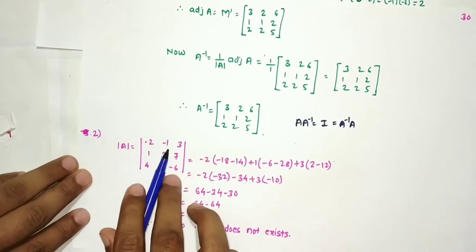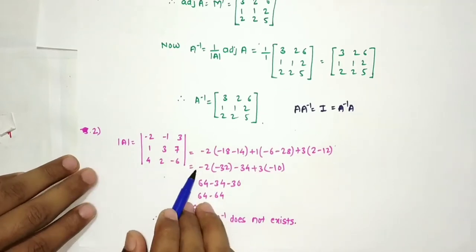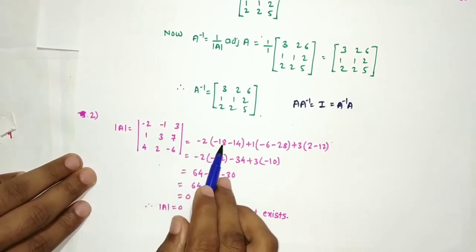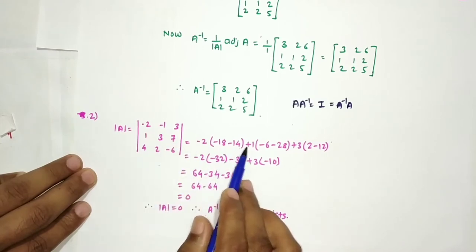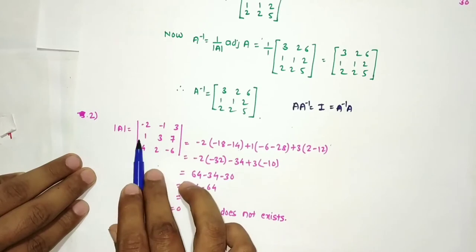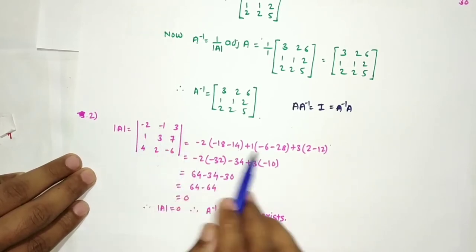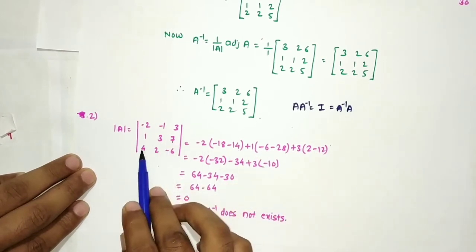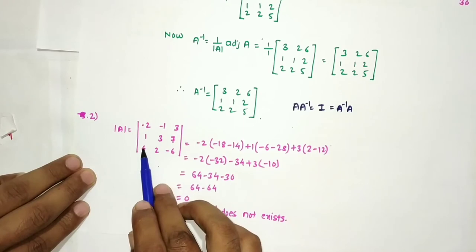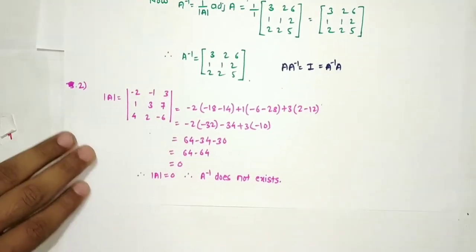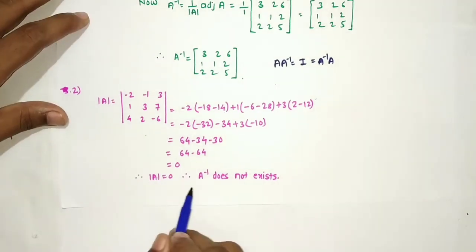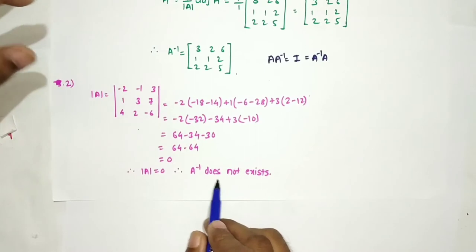The second example has matrix A = [−2, −1, 3; 1, 3, 7; 4, 2, −6]. We check its determinant: expanding, we get −2×(3×(−6) − 7×2) plus (−1)×(1×(−6) − 7×4) plus 3×(1×2 − 3×4). Solving: −2×(−18−14) + (−1)×(−6−28) + 3×(2−12) = 0. Since determinant of A is zero, A inverse does not exist.